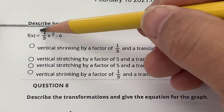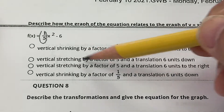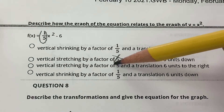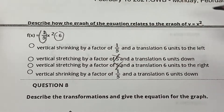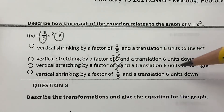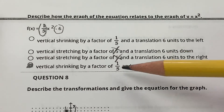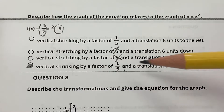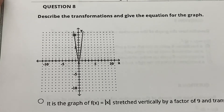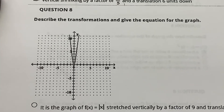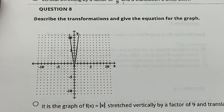That 6 outside is just a vertical stretch by a scale factor of 6. Then there's a vertical shrinking by one-fifth — so it can't be a stretch — and the 6 outside is 6 units down. So it's choice D: vertical shrinking by a factor of one-fifth, translation 6 units down.